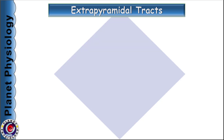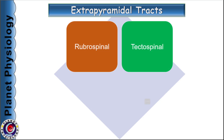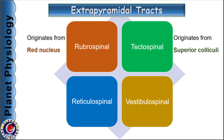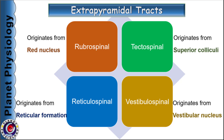Extrapyramidal tracts include rubrospinal, tectospinal, vestibulospinal and reticulospinal tracts. If you observe, all these names end with the word 'spinal.' In each name, the first half indicates the origin of the tract and the later half its termination. Being descending tracts, termination is common — the spinal cord — hence the suffix 'spinal.' Rubrospinal tract originates from the red nucleus, tectospinal from superior colliculi, vestibulospinal from vestibular nuclei and reticulospinal from reticular formation. All these nuclei are components of the brainstem.